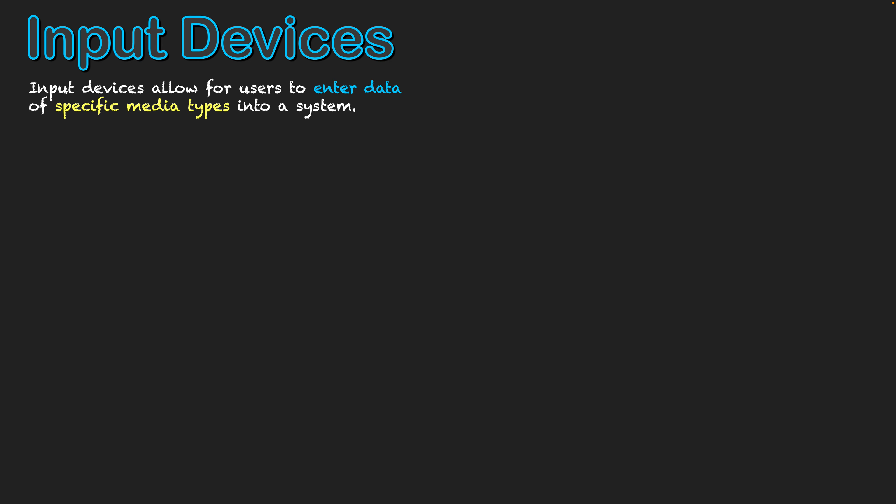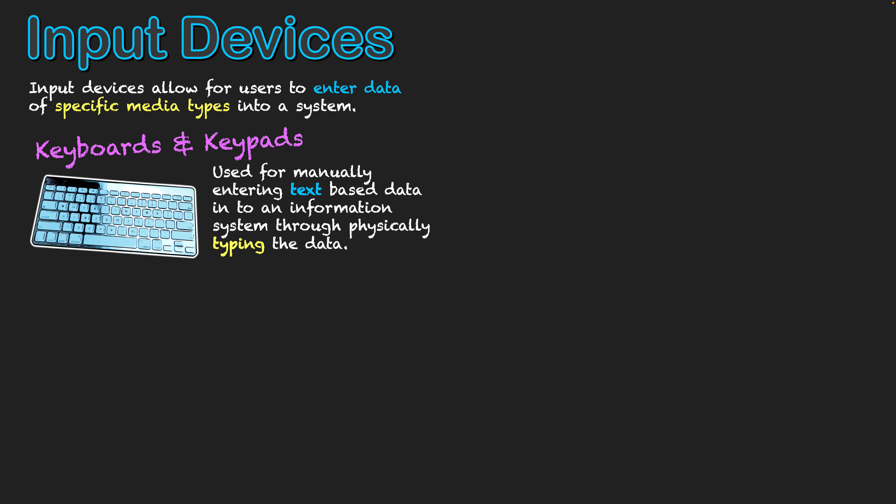Firstly, we'll take a look at keyboards and keypads. They're used to manually enter text-based data into an information system through physically typing the data. You might have a keyboard right in front of you — you press A, and A will appear on screen. I've also highlighted keypads because your phone has a touchscreen keypad that pops up when you need to send a message, also allowing you to type in text-based information.